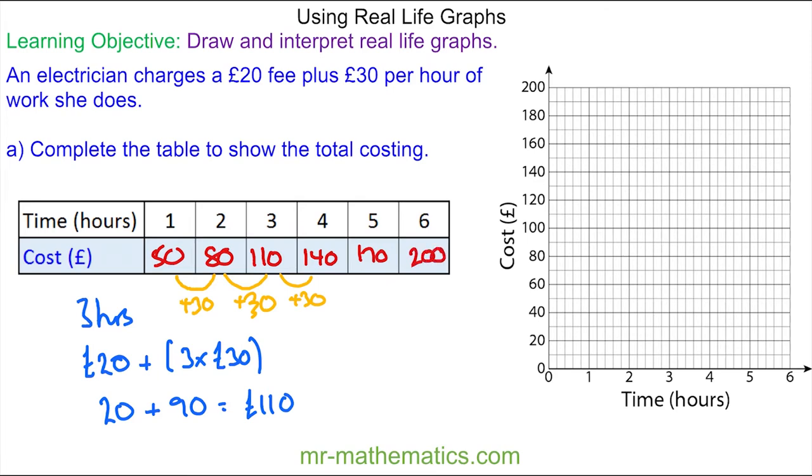And we can check this works. For six hours, we have the call out charge plus six lots of the hourly charge, which is £20 plus £180, which is £200.